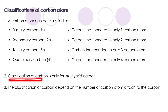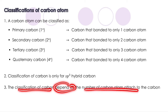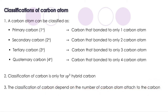Classification of carbon is only for sp3 hybrid carbon, in which carbon can make four single bonds. But if the carbon is making a C double bond C or C triple bond C, that carbon cannot be classified into primary, secondary, tertiary, or quaternary carbon. The classification of carbon depends on the number of carbon atoms attached to that carbon.